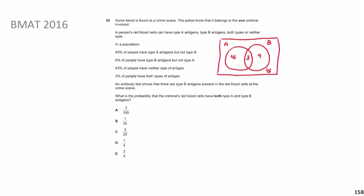We want P(both A and B | type B present). Using the conditional probability formula: P(both | B) = P(both AND B) / P(B). P(both AND B) is just 3 (they have both, so they definitely have B). P(B) = those with B only plus those with both = 9 + 3 = 12. So the answer is 3/12 = 1/4. The answer is D.